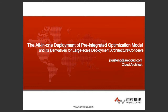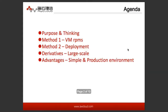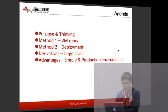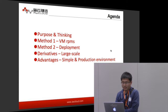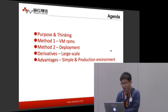For more information and details, you can see the PDF files — I will just cover some keywords. First, the agenda: Purpose and Thinking, Method One and Two, Derivatives, and Advantages. Okay, let's go.